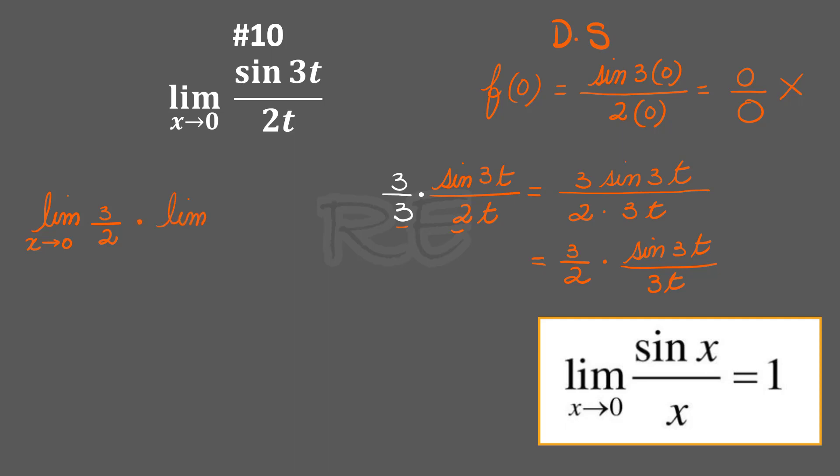It's the limit of 3/2 as x gets closer to 0, times the limit of sin(3t) over 3t as x approaches 0. The limit of 3/2 as x approaches 0 is 3/2, and